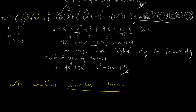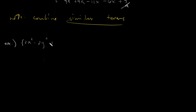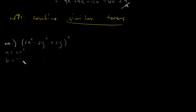Let's have our final example for our special product. Last example would be (2X² − 3Y² + 2Y) squared. To avoid confusion, I will list down A, B, and C. A is 2X², B is negative 3Y², and C is 2Y.